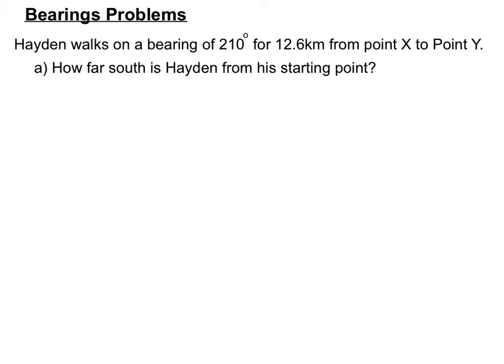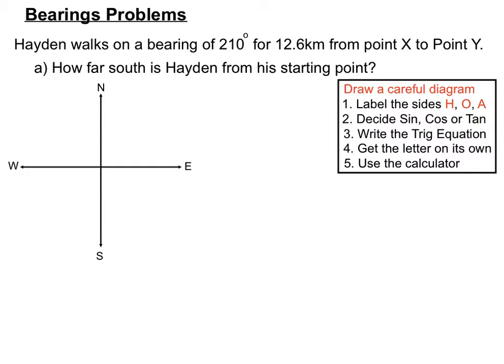This is our first example. Hayden walks on a bearing of 210 degrees for 12.6km from point X to point Y. The question asks how far south is Hayden from his starting point. Step 1 is to draw a great diagram and we'd better start with a set of compass lines, then create a right angle triangle from which we can use our normal steps to solve trigonometry problems.